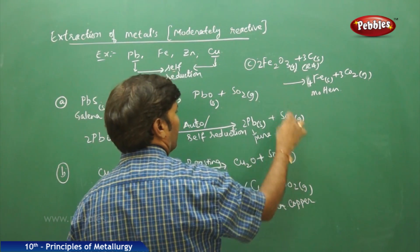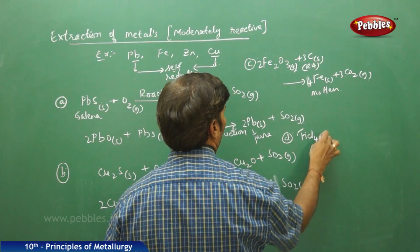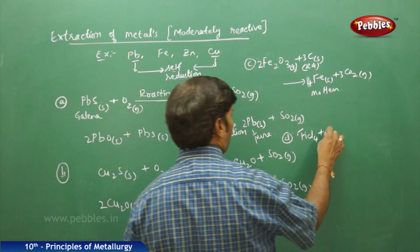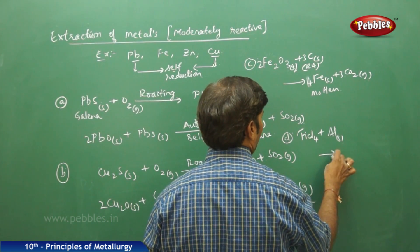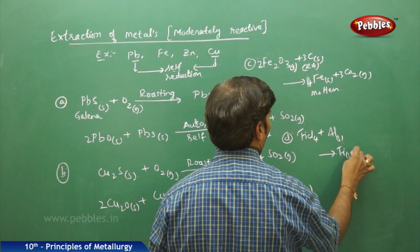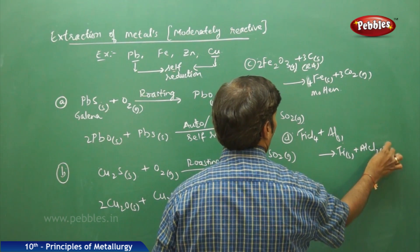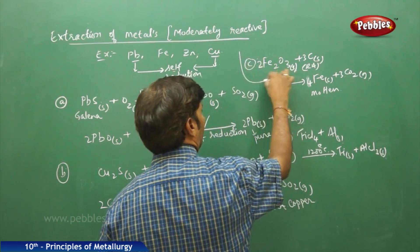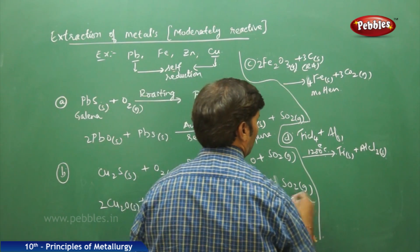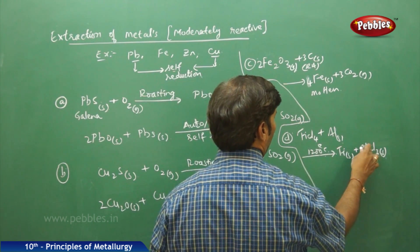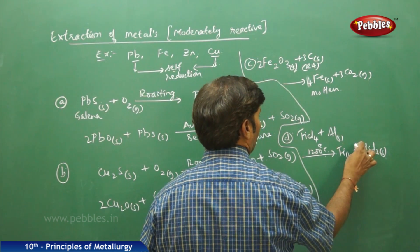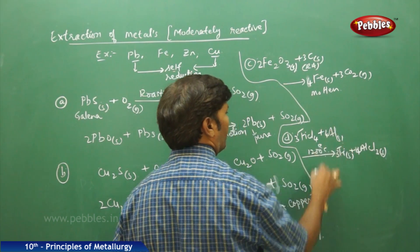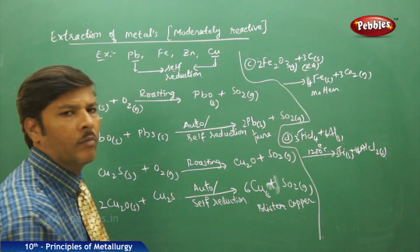If you take titanium chloride (TiCl4) and treat it with more active metals like aluminium solid, we get titanium solid plus aluminium chloride (AlCl3) solid at a high temperature of around 1200°C. To balance the equation: TiCl4 has 4 chlorines and AlCl3 has 3, so take 4 Al and 3 TiCl4, giving 4 AlCl3 and 3 Ti. The reaction is balanced.